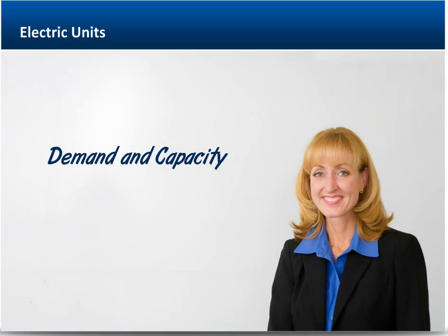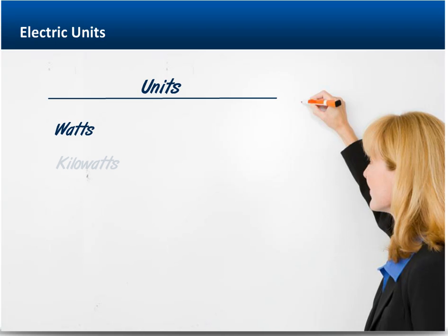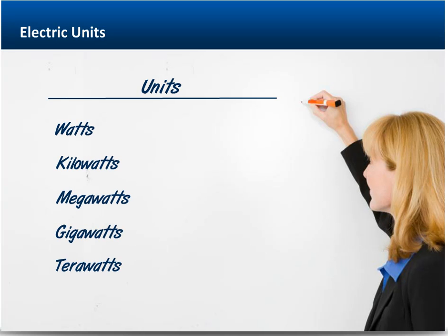First, let's discuss units of electric demand or capacity. Demand reflects the instantaneous amount of work required to perform a specific function, such as creating light or powering a microchip. Capacity reflects the instantaneous ability to provide energy required to do work. Demand and capacity are measured in units of watts, kilowatts, megawatts, gigawatts, or terawatts.